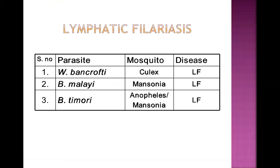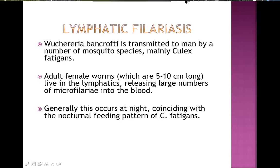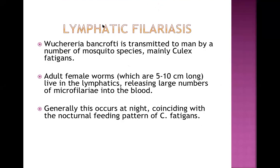Wuchereria bancrofti, Brugia malayi, and Brugia timori are transmitted by Culex, Mansonia, Anopheles, and Aedes mosquitoes. The most important mosquito transmitting Wuchereria bancrofti is Culex fatigans. Any type of mosquito can transmit lymphatic filarial worms, especially microfilariae, and all cause lymphatic filariasis disease.